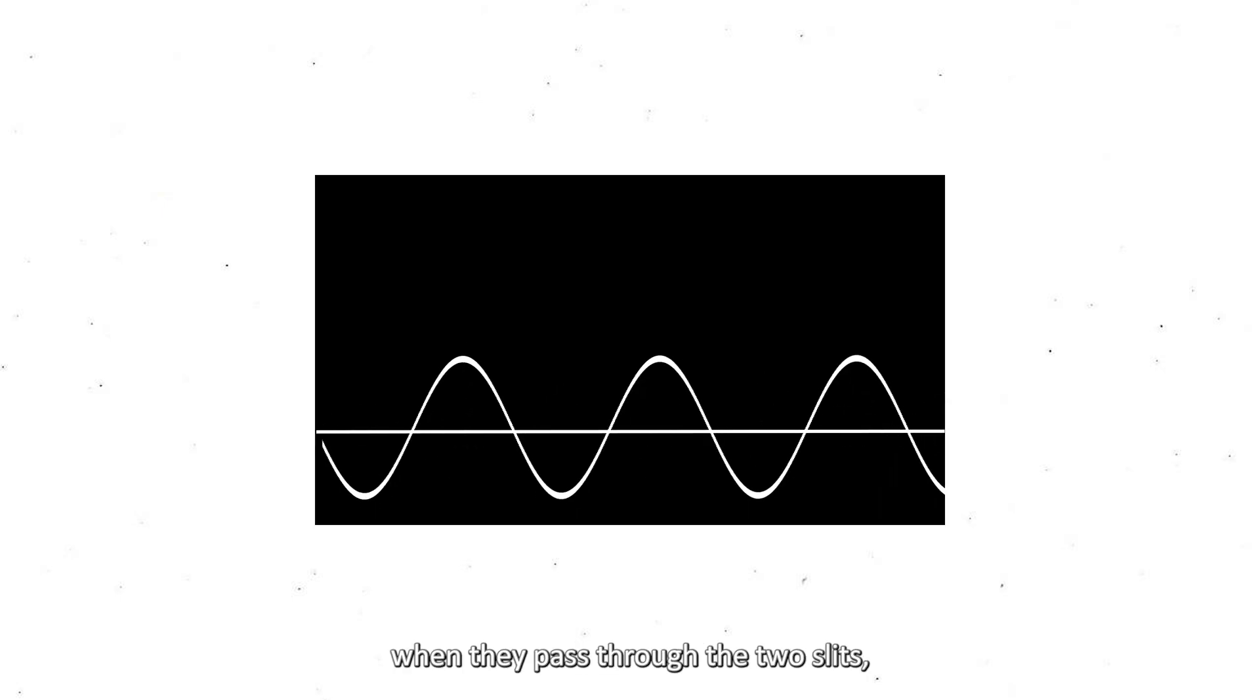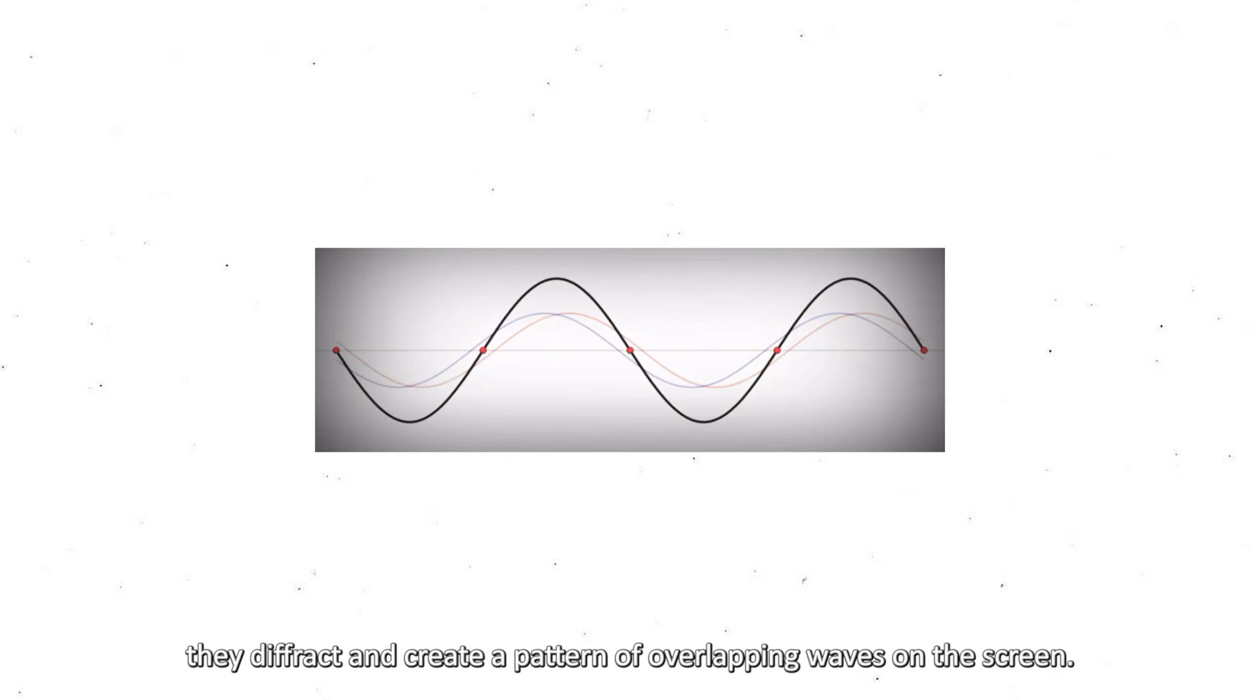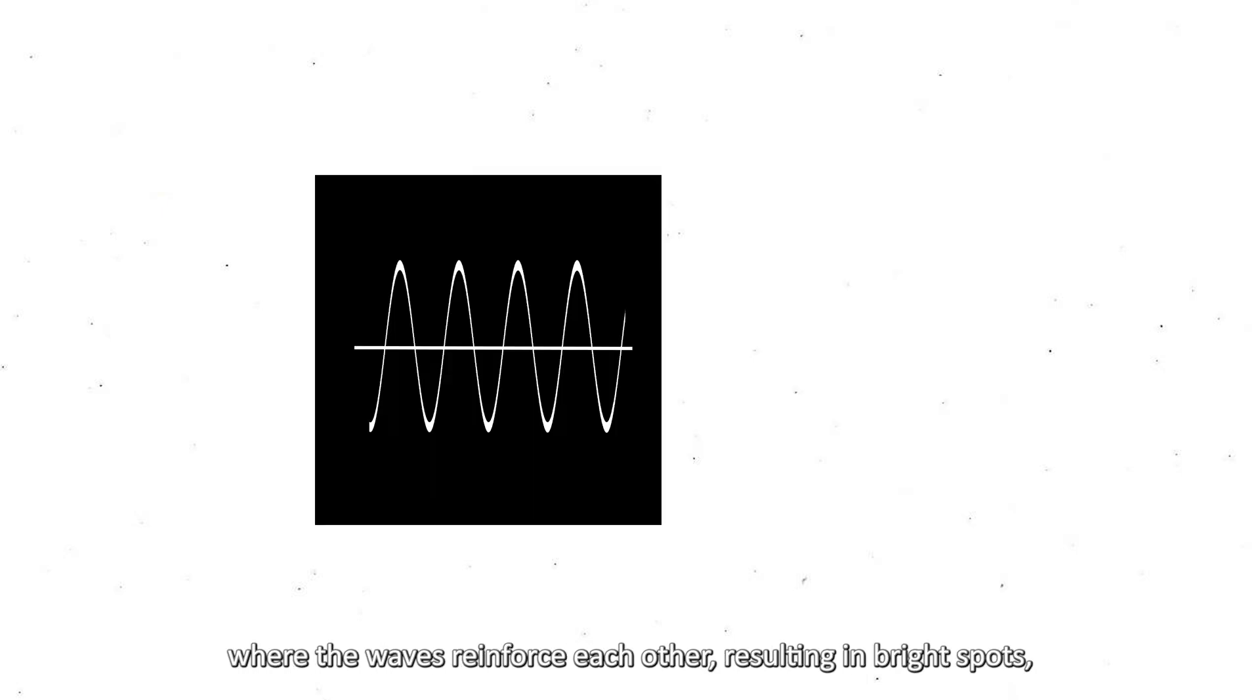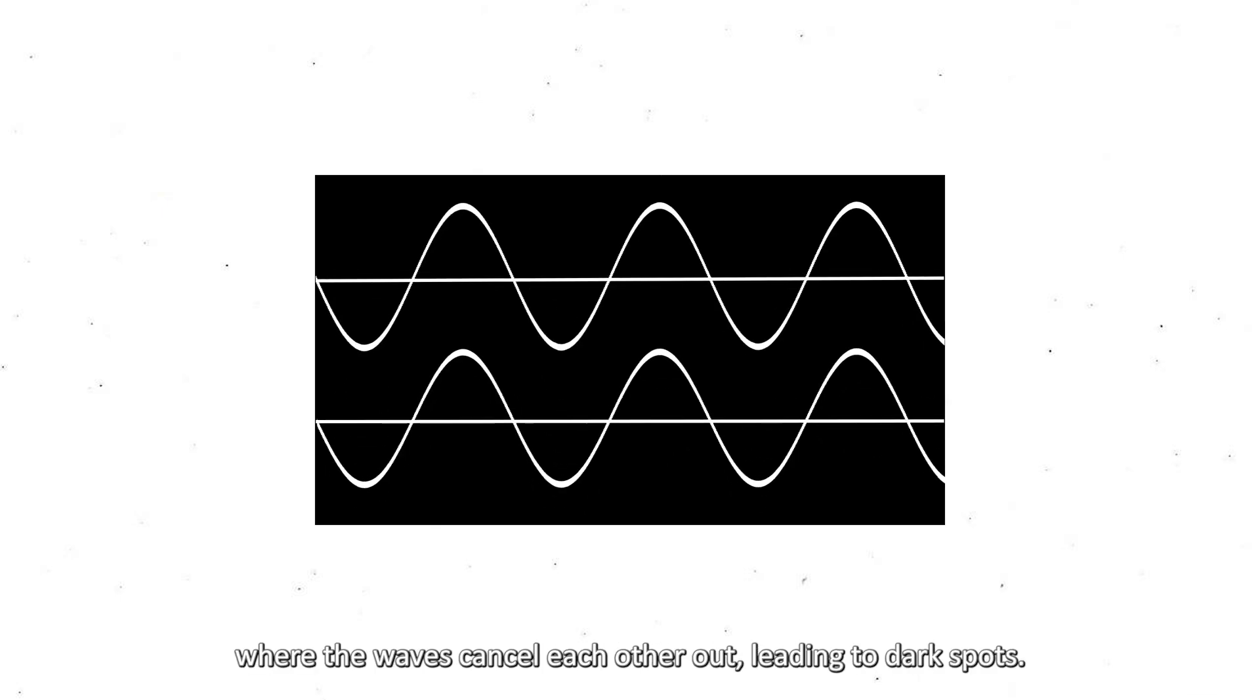In the case of waves, when they pass through two slits, they diffract and create a pattern of overlapping waves on the screen. This pattern shows areas of constructive interference, where the waves reinforce each other, resulting in bright spots, and areas of destructive interference, where the waves cancel each other out, leading to dark spots.